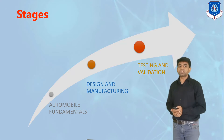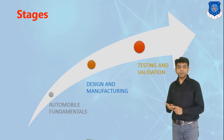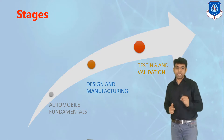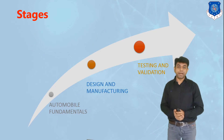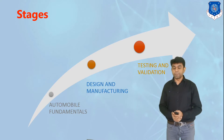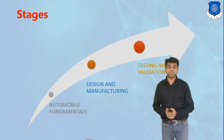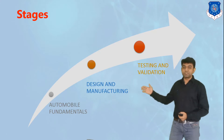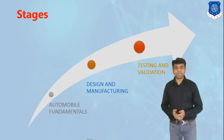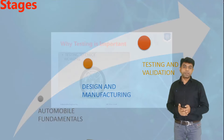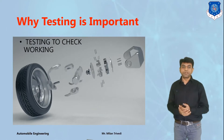Once these components are manufactured, the third part that arises is the testing part. We need proper testing methods to validate a part — to confirm that a particular component can be put into the market and sold. That's why we study this subject after understanding automobile fundamentals and design and manufacturing concepts. The third stage is about the testing and validation part.